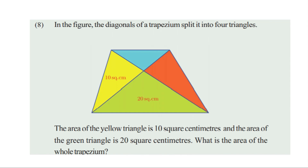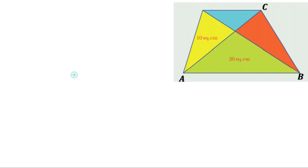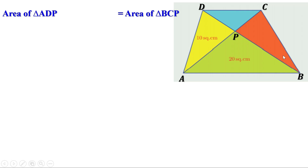Next problem. In the figure, the diagonals of a trapezium split it into four triangles. The area of the yellow triangle is 10 cm² and the area of the green triangle is 20 cm². What is the area of the whole trapezium? ABCD is a trapezium, so AB and CD are parallel. From the previous result, the two triangles on the sides are of equal area, so area of triangle ADP = area of triangle BCP = 10 cm².